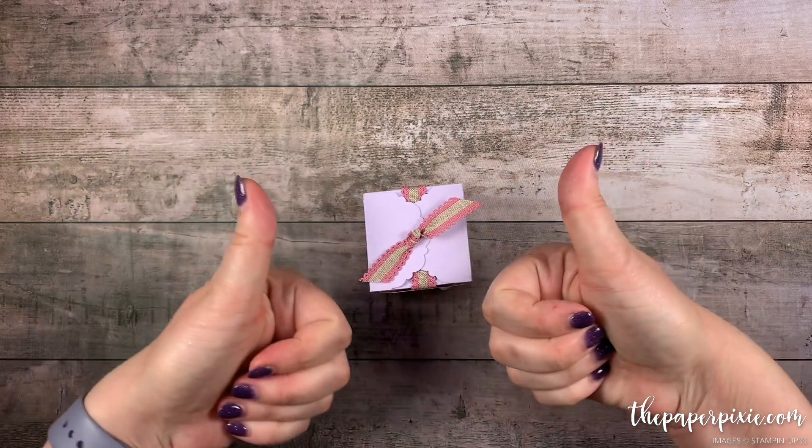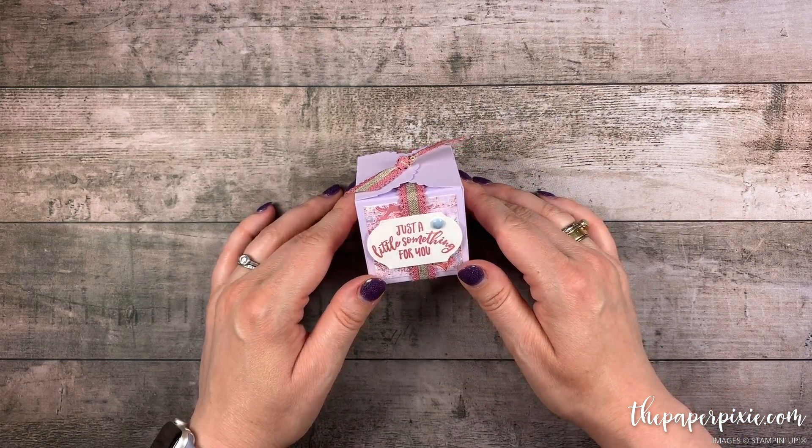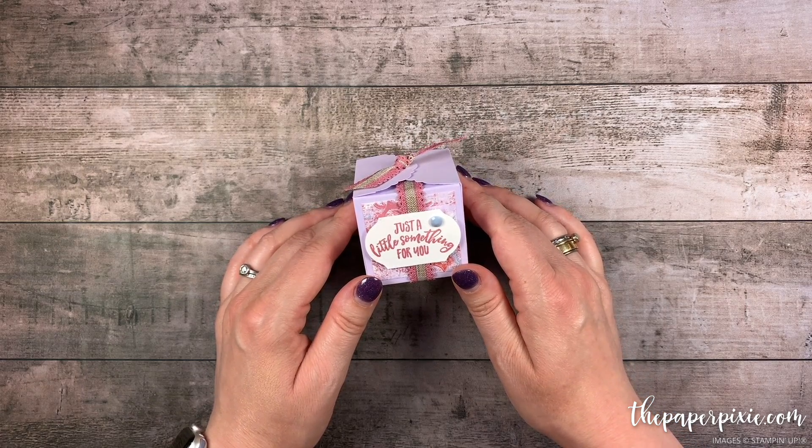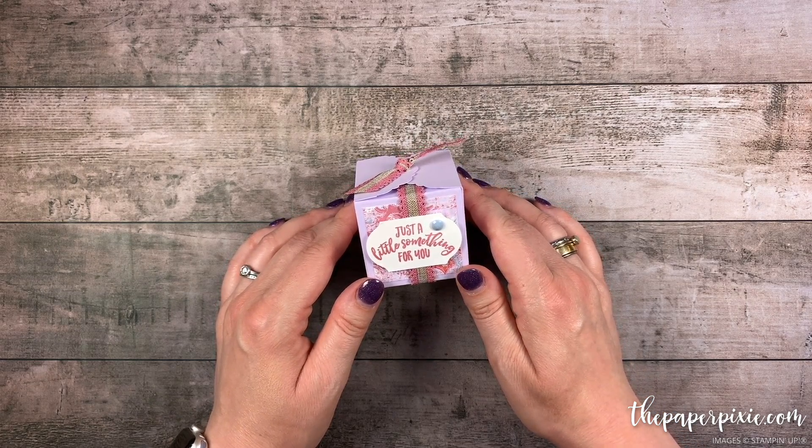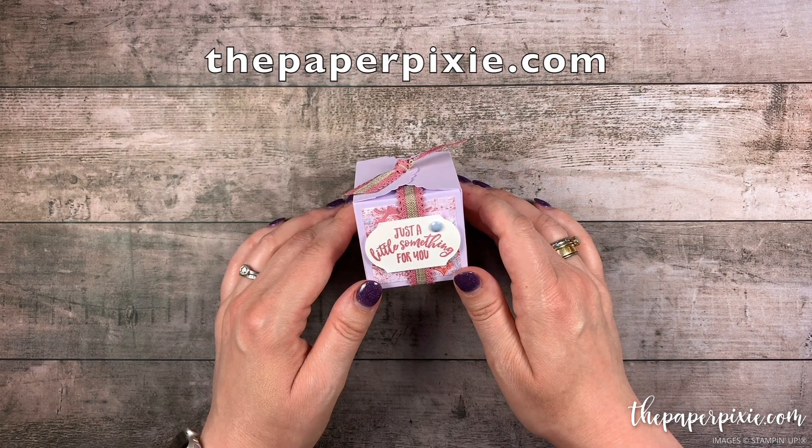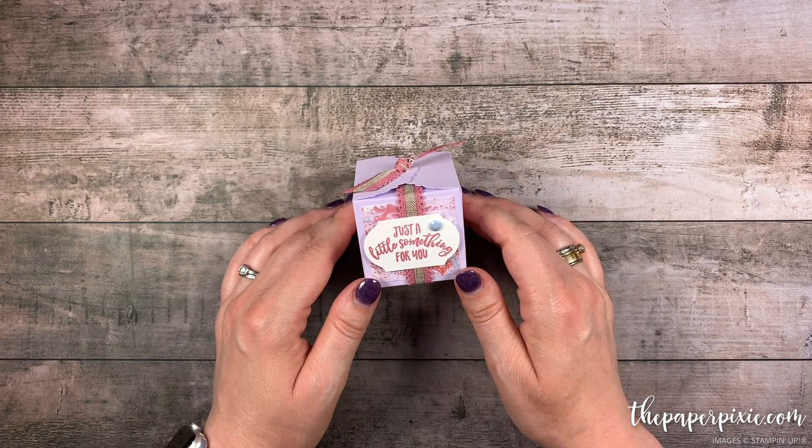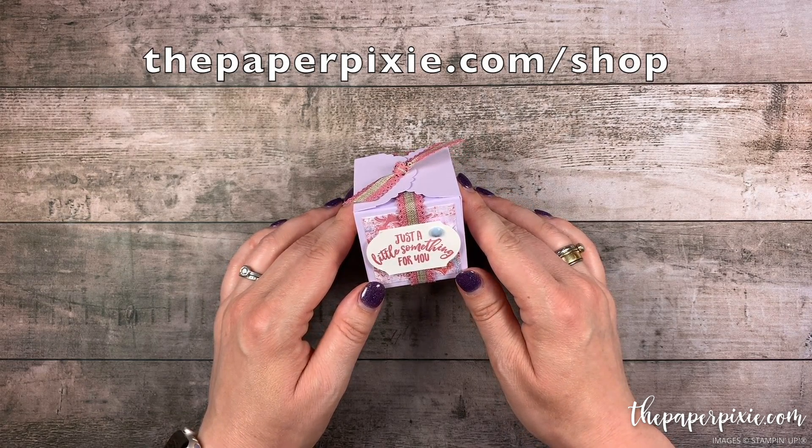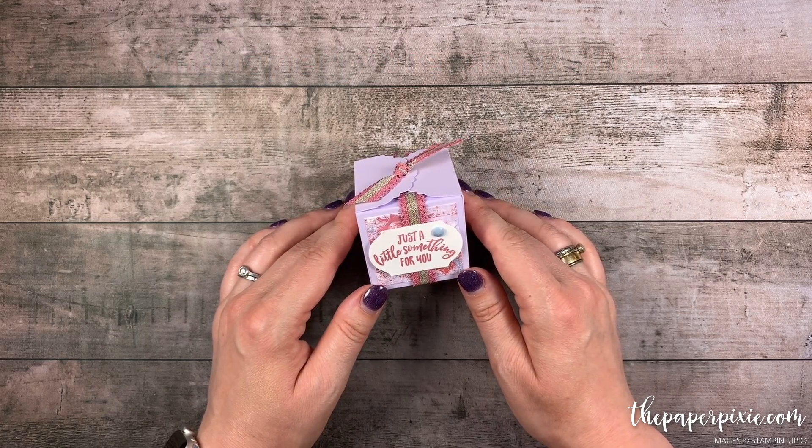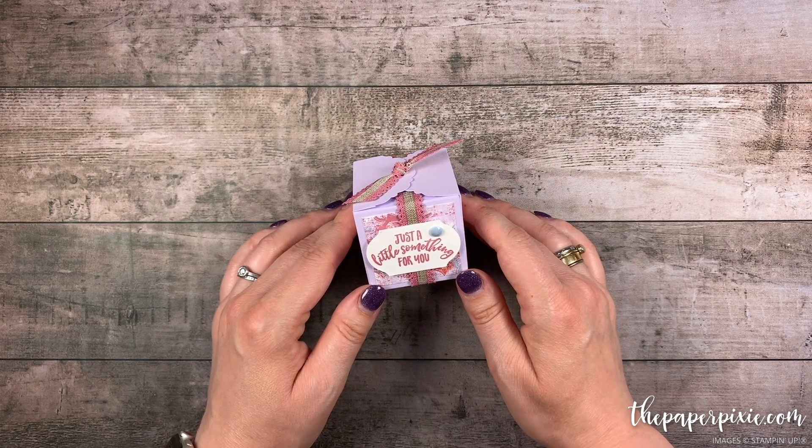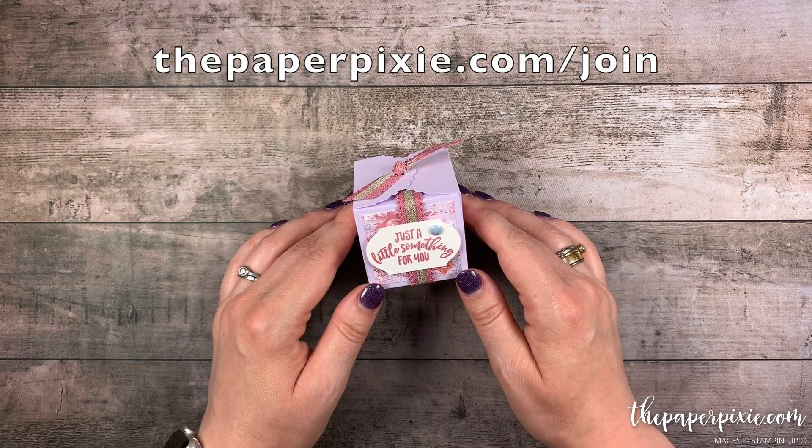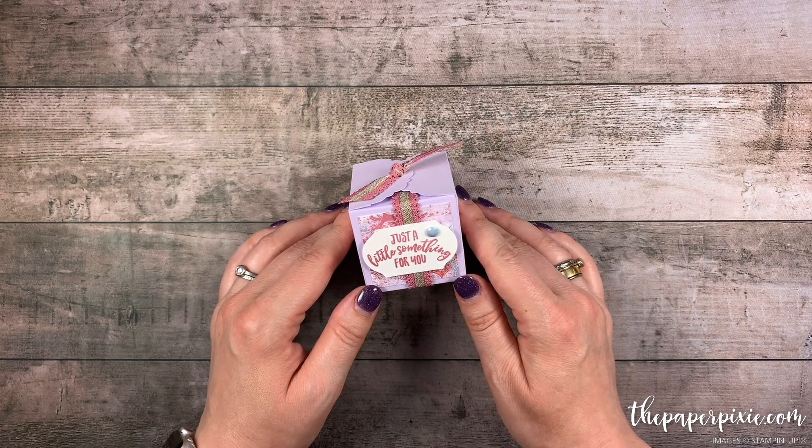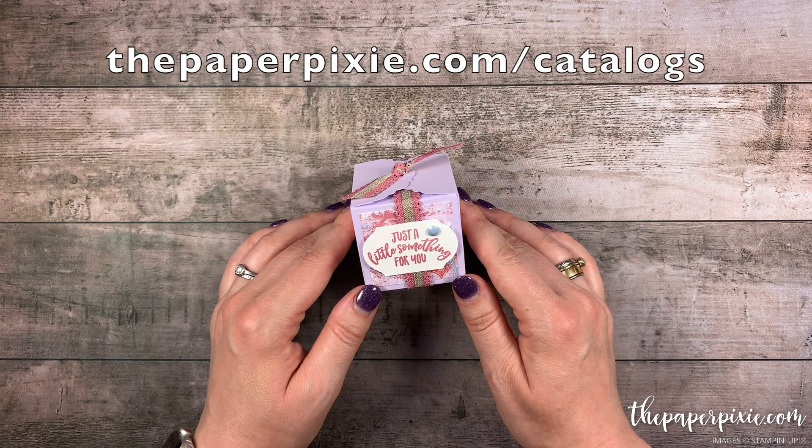If you enjoyed this video please give me a thumbs up and subscribe to my channel so you don't miss my next video. And if you're interested in a discount on your Stampin' Up purchases, the Starter Kit is the ultimate bundle and I'd love to welcome you to my team of Paper Pixies. You can purchase the Starter Kit at thepaperpixie.com slash join. If you don't already have a demonstrator and you'd like a complimentary copy of one of our catalogs, you can submit a catalog request at thepaperpixie.com slash catalogs.